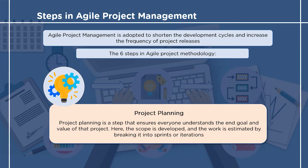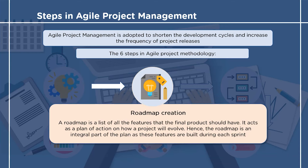Project planning also involves estimating the amount of time needed to complete those sprints. The second step is roadmap creation. A roadmap is a plan of action that shows how a project shall evolve over time. A list of all the features that the final product should have is created, and steps to achieve those features are taken.